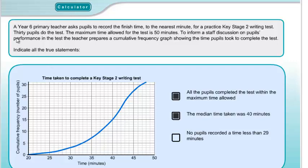Statement 3: No pupils recorded a time of less than 29 minutes. Looking at 29 minutes on the graph, we can see there are actually some pupils who finished before that point — approximately 2 students completed in 29 minutes or less. So that is a false statement.